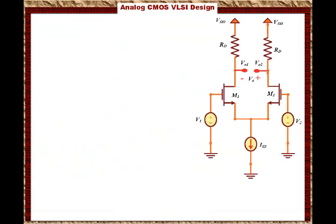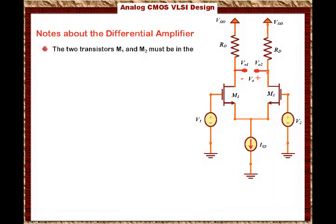Let us have notes about the differential amplifier. Here is the first one. The two transistors, M1 and M2, must be in the saturation region and conducting at all times. The question is why. The answer is very simple. In the saturation region, the two transistors are behaving as amplifiers. To use the circuit as an amplifier, transistors have to be in the saturation region.